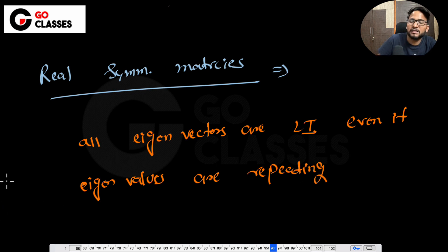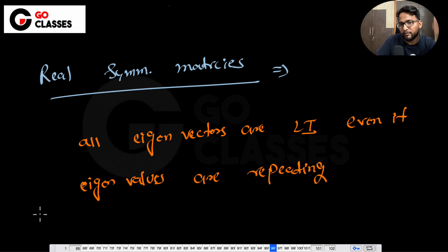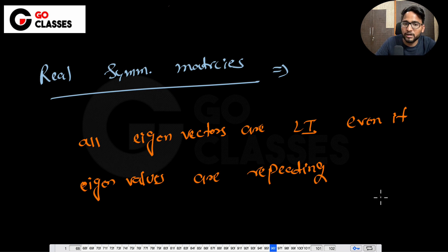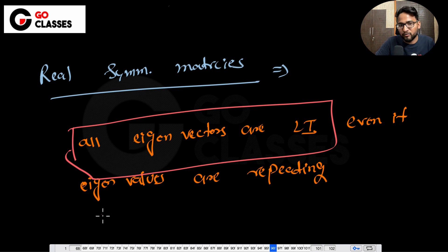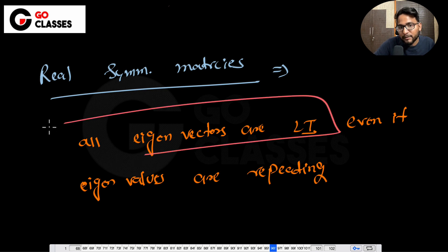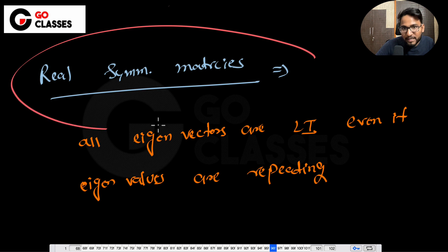In machine learning there is a concept called diagonalization, which requires n linearly independent eigenvectors. Diagonalization is a very important concept and many algorithms are based on it. Real symmetric matrices are always diagonalizable. So if all eigenvectors are linearly independent, those matrices are diagonalizable, and that's why real symmetric matrices are always diagonalizable.